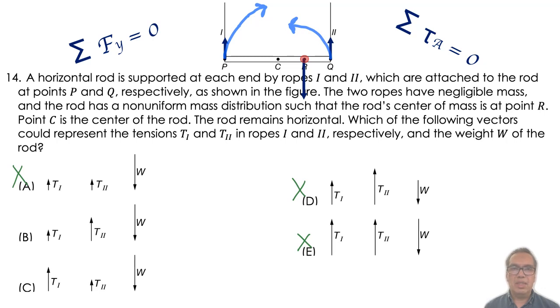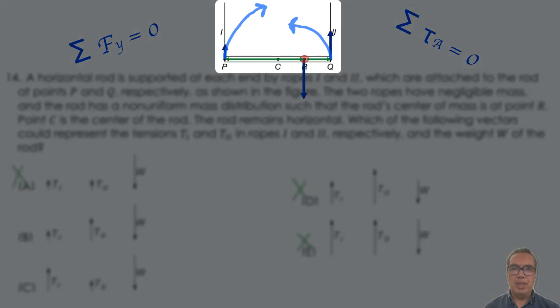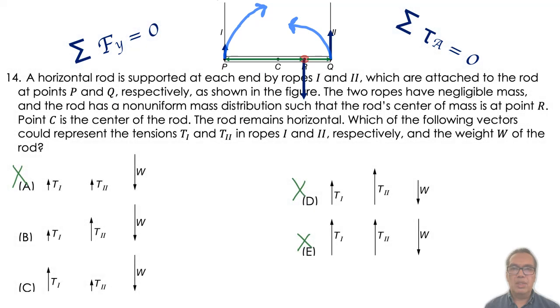The distance from R to P is larger than the distance from R to Q. Therefore, the force at P must be smaller than the force at Q. So, T1 is smaller than T2.